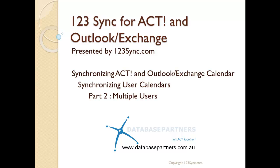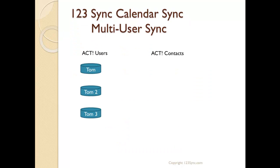Welcome to 123 Sync for ACT and Outlook Exchange. This section will deal with how to synchronize multiple users with calendars. There are quite a few challenges dealing with multiple users. The easiest challenge is to sync one ACT user to ACT contacts. These functions work the same way as dealing with a single user, so if you want to know more about this, please go to part 1 that deals with single user synchronization.